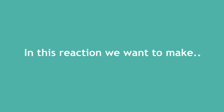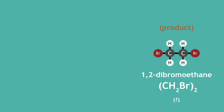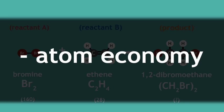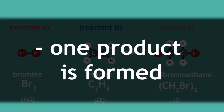Let's try an example. In this reaction, we want to make 1,2-dibromoethane by reacting bromine with ethene. Although we have not even considered any molecular masses yet, pause the video and take a moment to predict the atom economy in this reaction, where only one product is formed.